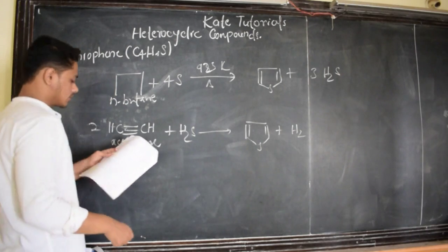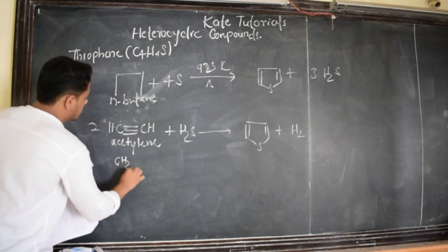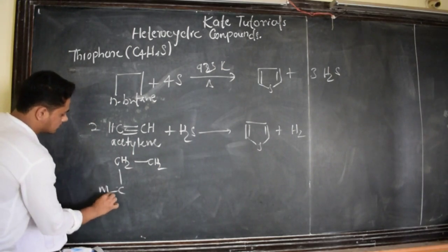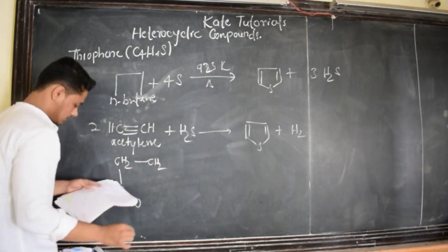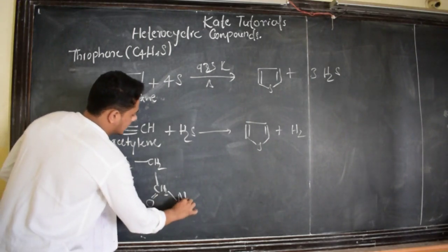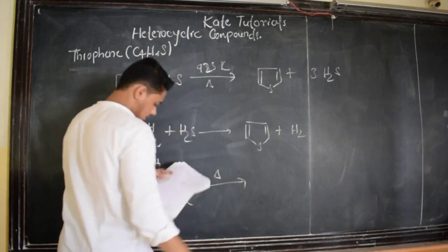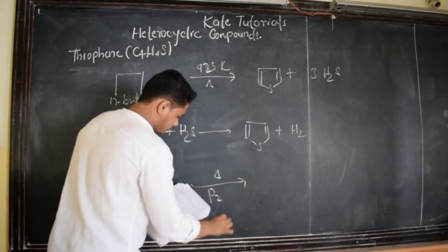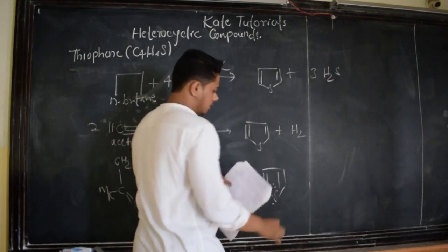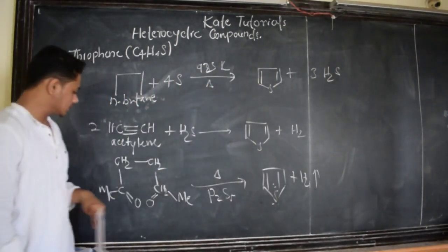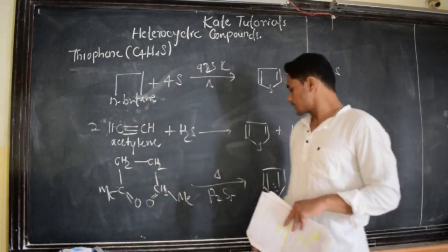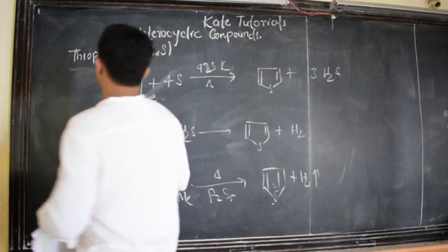There is also a method from 1,4-diketone — that is Paal-Knorr synthesis, as we discussed for pyrrole and furan. The 1,4-diketone compound has double bonds and ketone groups. When this is heated in the presence of P2S5, we get thiophene and hydrogen gas. This is the Paal-Knorr synthesis of thiophene. The mechanism is the same as discussed for furan and pyrrole — you can try it yourself, but it is not in our syllabus.